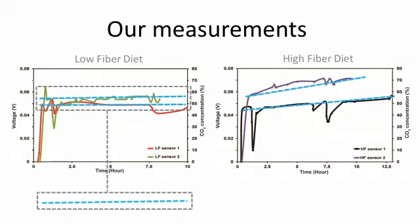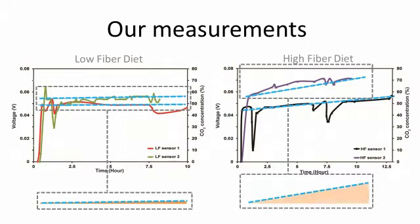Pigs on a high fibre diet showed an increase in the carbon dioxide concentration in the first 8 to 10 hours, while those on a low fibre diet did not show any change in the carbon dioxide profile with reference to the baseline.